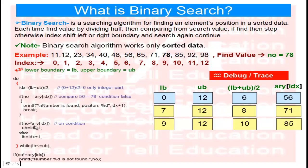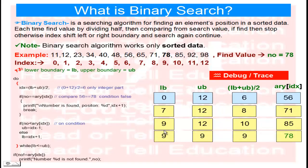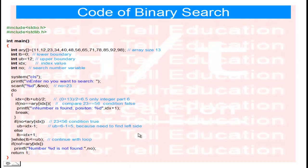Is 78 less than 85? This condition is true. So upper boundary index = IDX - 1 = 10 - 1 = 9. Now lower boundary is 9 and upper boundary is 9. IDX = (9 + 9) / 2 = 9. At index 9, the value is 78. The condition 78 == 78 is true — number found at position index + 1 = 10. The loop breaks.